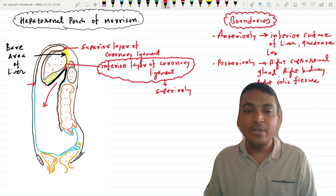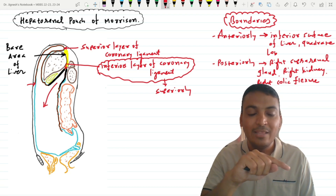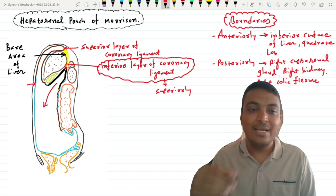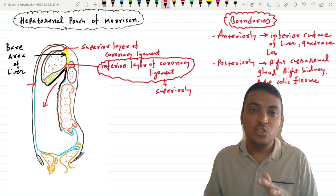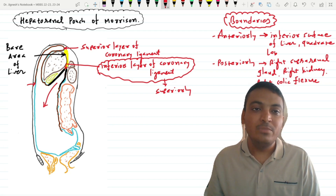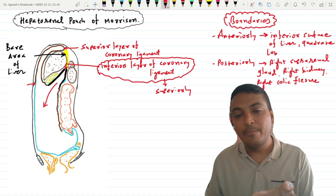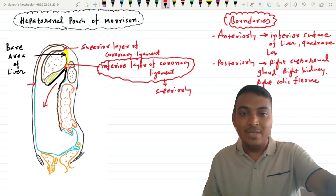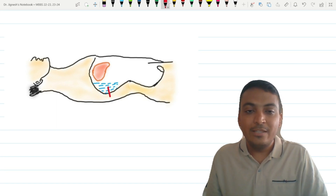Now what is the clinical importance of this hepatorenal pouch? This peritoneal pouch is formed by the visceral peritoneum covering the inferior surface of the liver, the inferior layer of the coronary ligament, the anterior surface of the right kidney, right colic flexure, and right suprarenal gland. This pouch communicates with the lesser sac through the epiploic foramen and with the pelvic peritoneal cavity inferiorly since it is open inferiorly. This pouch is the most dependent space of the peritoneum when the patient is in the supine (sleeping) position.